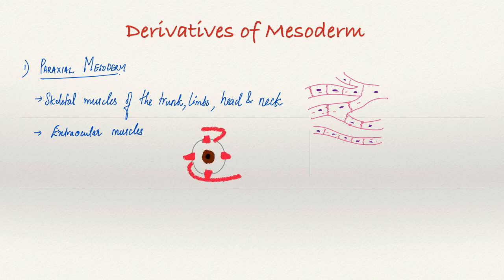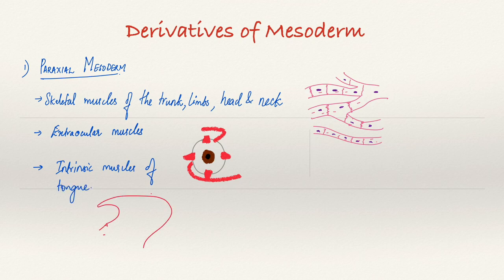Then it forms the intrinsic muscles of our tongue, which includes the superior longitudinal muscle, the inferior longitudinal, the transverse and the vertical muscles.